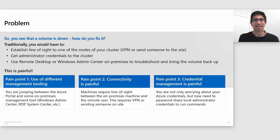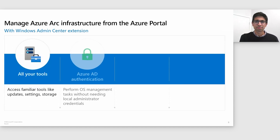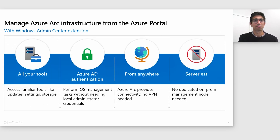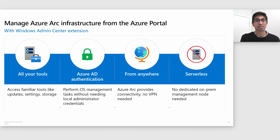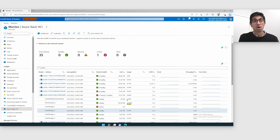Fortunately, Contoso has Azure Stack HCI, and they don't have to worry about any of these problems. They can manage their Azure Arc-enabled infrastructure directly from the Azure portal with the Windows Admin Center extension, getting all of the familiar monitoring and management tools natively in the Azure portal. Access is controlled via Azure role-based access control, so there's no need to worry about local administrator credentials — it's available from anywhere with access to the Azure portal. Their centralized IT team in Seattle can access any tooling they need to manage their cluster in New York while staying in Seattle.